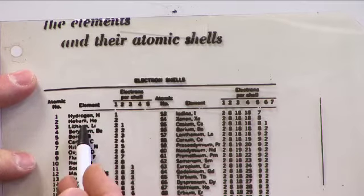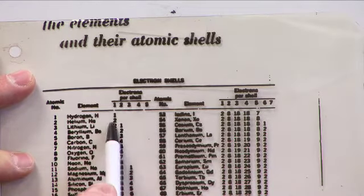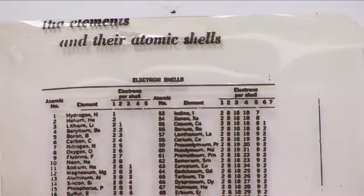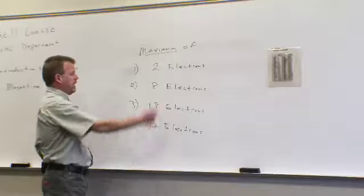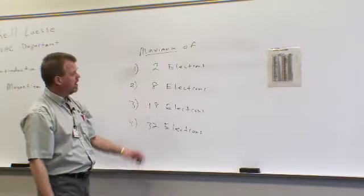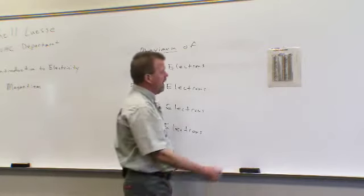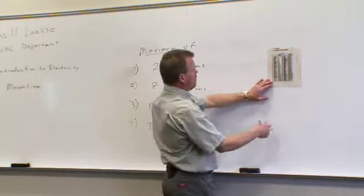When we get to lithium, element three, which will have three electrons, there are two in the first orbit and one in the next orbit or the second orbit. Being that the first can only hold two, therefore the third electron must go to the second orbit, which will hold eight max. As we come down to another example, let's drop down the chart a little bit.